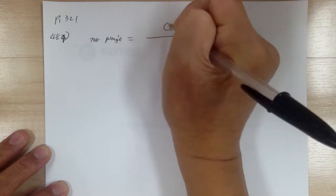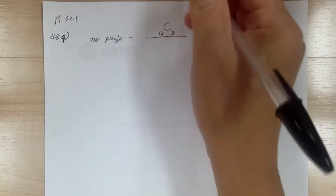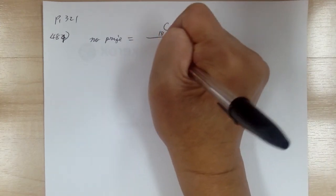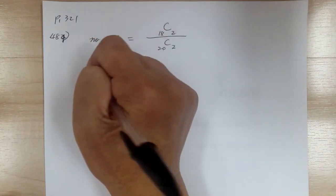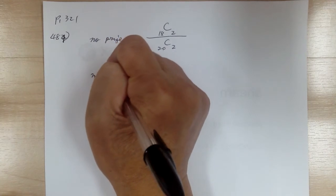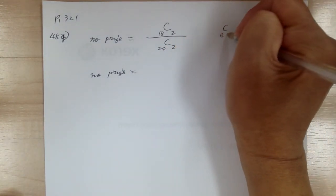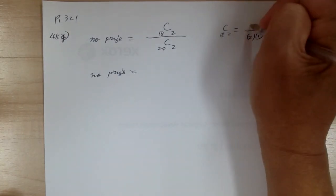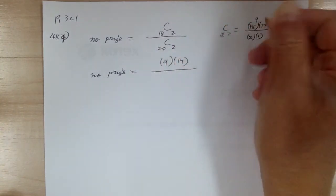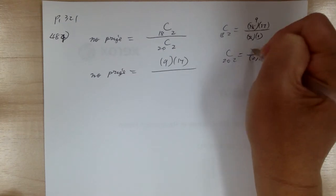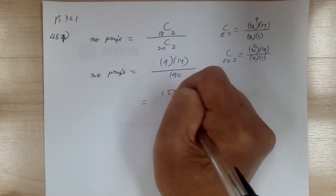No prize equals: the non-winning tickets — 18 non-winning tickets, you want to choose two — over total 20 tickets choosing two. So 18C2 equals 18 times 17 over 2 times 1, cancel to get 9 times 17 equals 153. And 20C2 equals 20 times 19 over 2 times 1, which equals 190. So no prize equals 153 over 190.